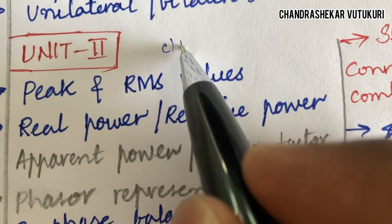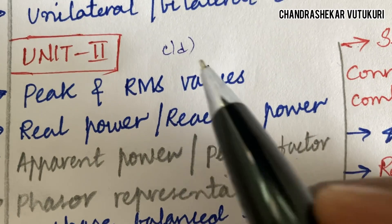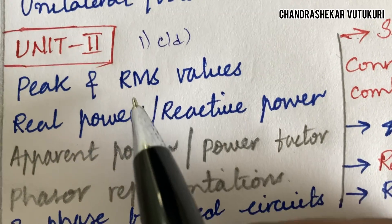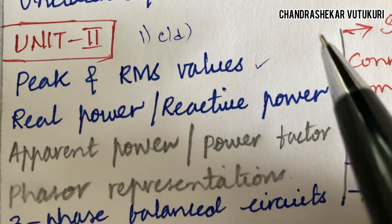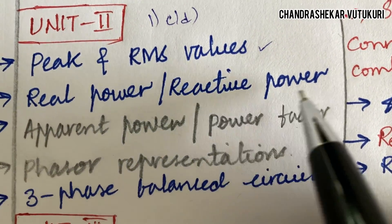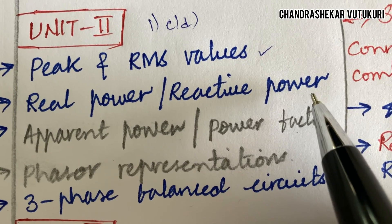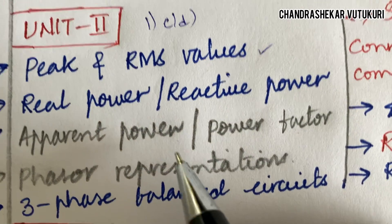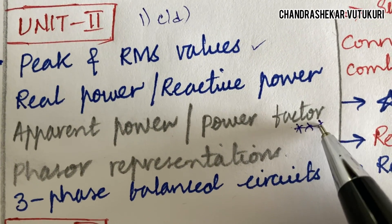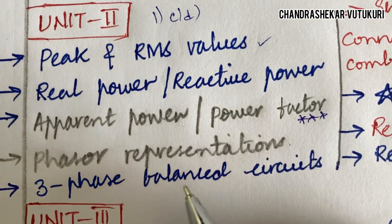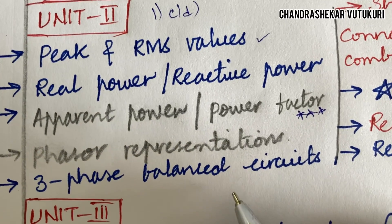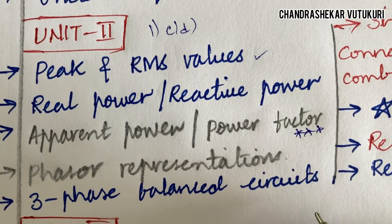Next I am going to cover question CD within Part 1. The peak and RMS values, real power, reactive power, their definitions, apparent power, and power factor are said to be among the topmost short questions. Phasor representation and three-phase balanced circuits are also key topics here.